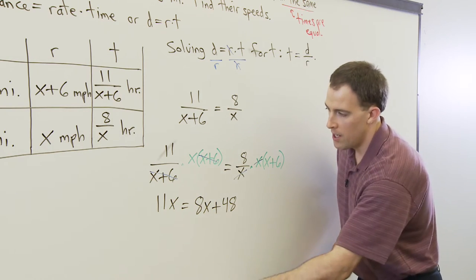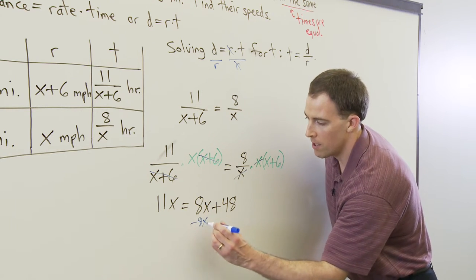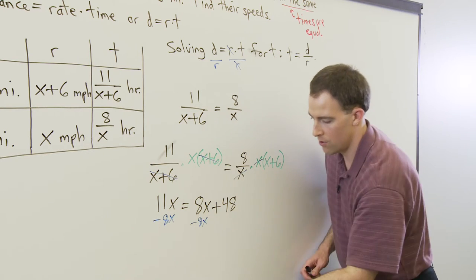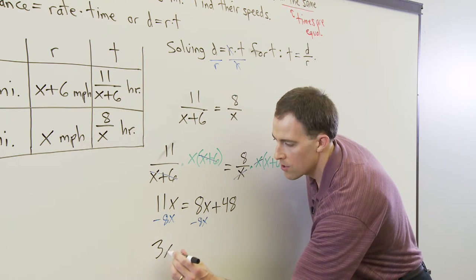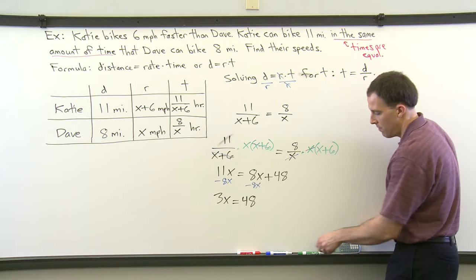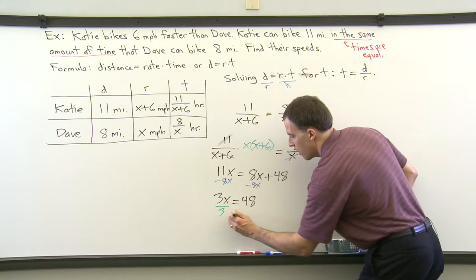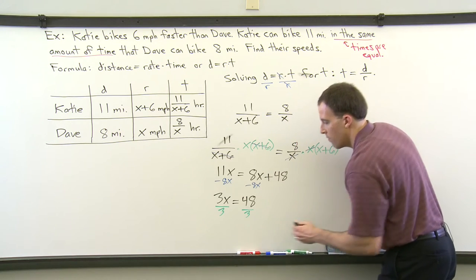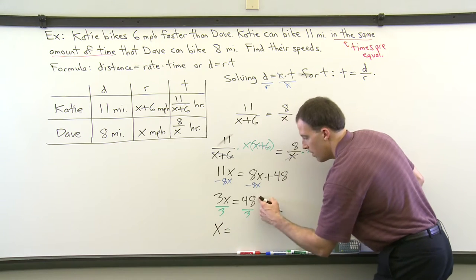From here, we need to collect the X terms on the left. That can be done by subtracting 8X from both sides. 11X subtract 8X is 3X. So we've got 3X is equal to 48. And then to finish it up, we can divide both sides by 3. X therefore equals 48 divided by 3, which is 16.